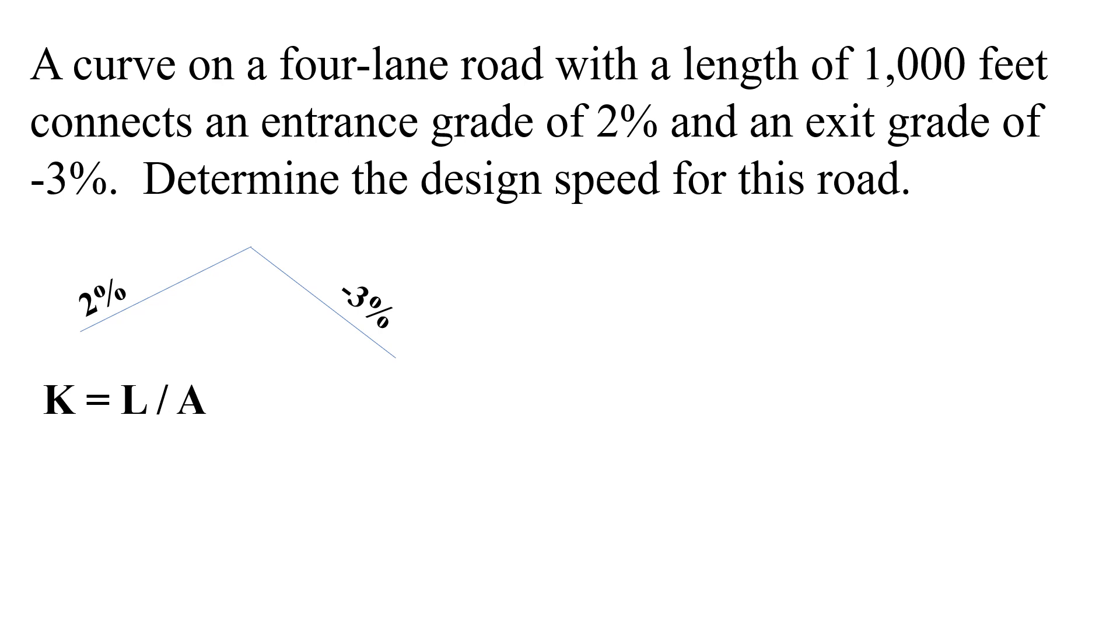Rewritten we can have that K equals L divided by A because we're given L and we can determine A based on what we're given. Now we weren't explicitly told this is a vertical curve but given that we have grades we can determine this is a vertical curve and not a horizontal curve.